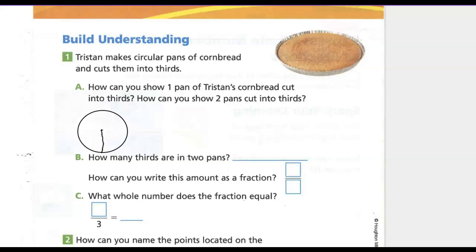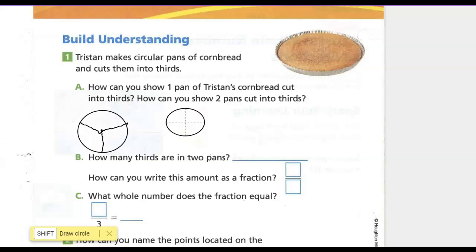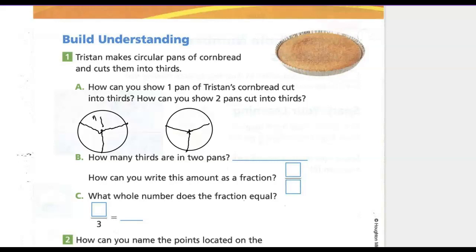Draw a line straight down as if going all the way up and down the circle, then make kind of a Y — they won't be perfect. It says she has two pans, so let's go ahead and make two pans. Divide the second one into thirds with a giant Y shape. So each one of these sections is one-third of a pan.